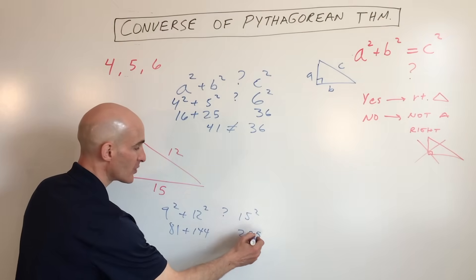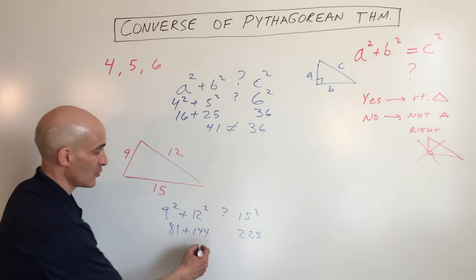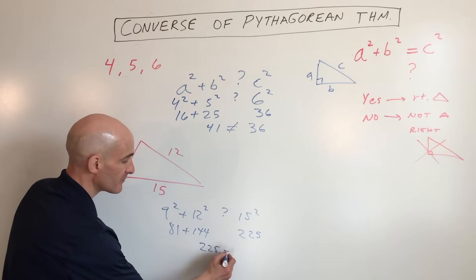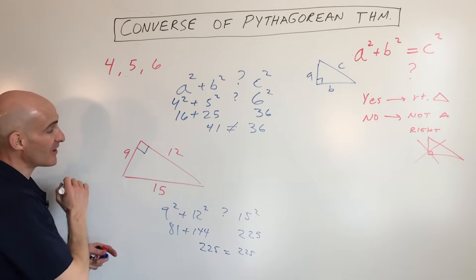15 squared is 225. 15 times 15. And if we add these together, we do get 225. It does equal 225 on the right side. So that means that, yes, this is a right triangle. That means this must be a right angle right there.